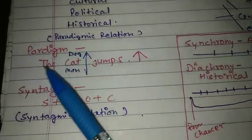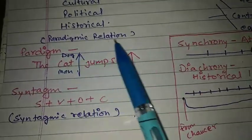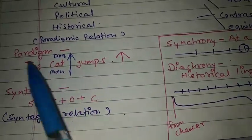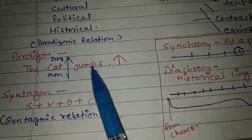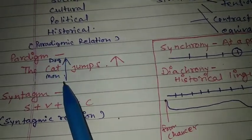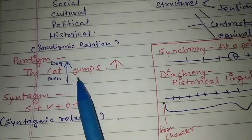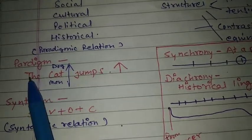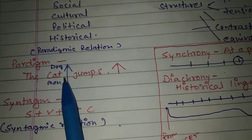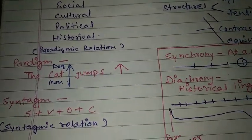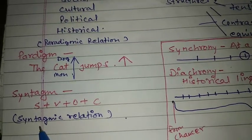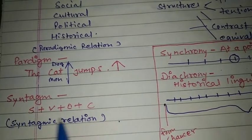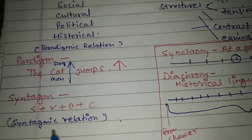Here we have paradigm and syntagm. What is a paradigmatic relationship? We have some words which can fit in the same position in a sentence. Like 'the cat jumps', 'the dog jumps', 'the man jumps' — so dog, cat, and man have a paradigmatic relationship. But 'the table jumps' doesn't work, so 'table' doesn't have a paradigmatic relationship here. Syntagm comes from syntax — if a word has a grammatical relationship with other words, we call it syntagm.